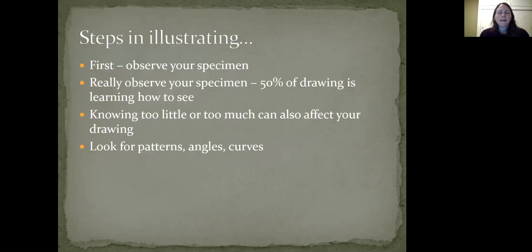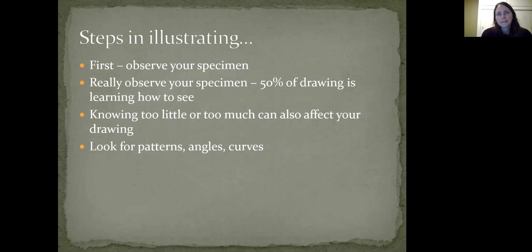So the steps in illustrating — I'm just going to ask you to pause the video and go get a piece of paper, like a white piece of paper and a pencil, just a regular number two pencil, not a mechanical pencil if you can help it, and not a piece of paper with lines if you can help it. Once you have your paper, we're going to do some warm-up exercises to help you get loose and start thinking about how to draw what you're seeing. First of all, drawing is really about seeing — about 50% of drawing is learning how to see. Knowing too little or too much about your specimen can be an impediment and can bias your drawing.